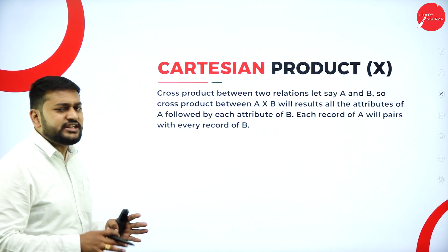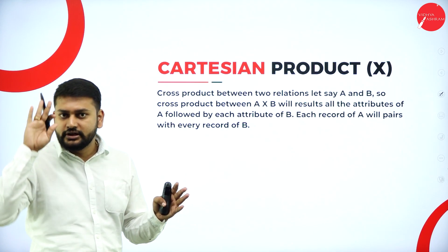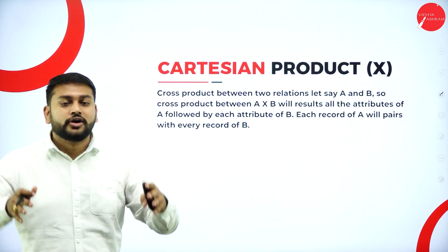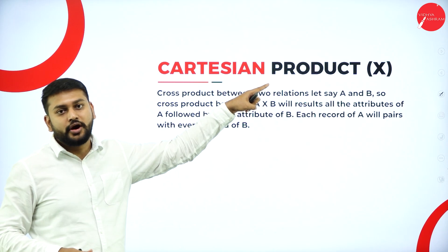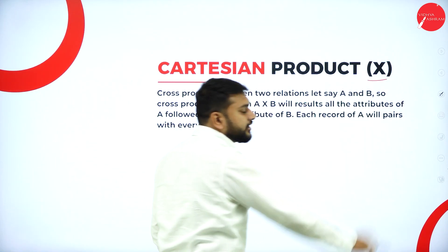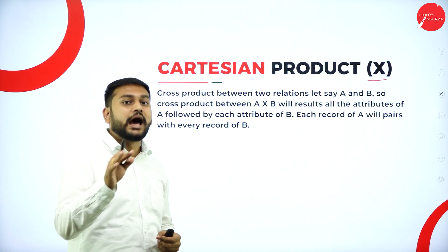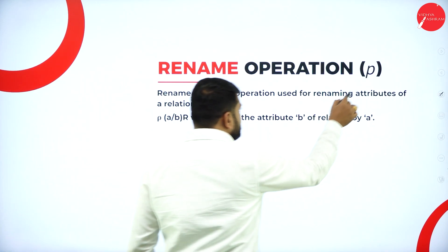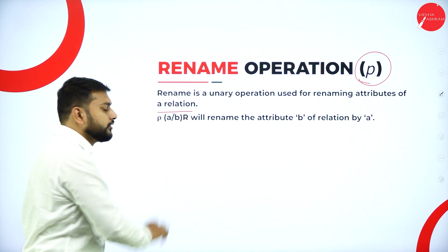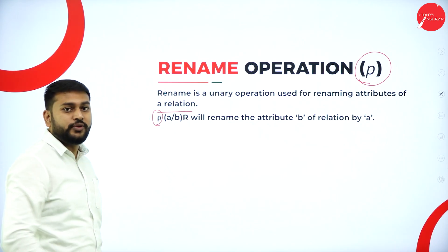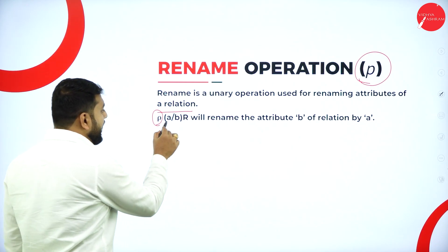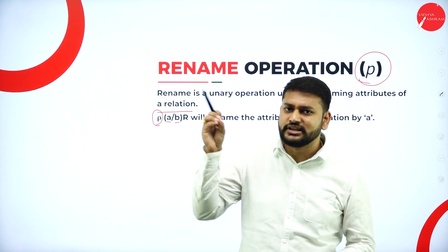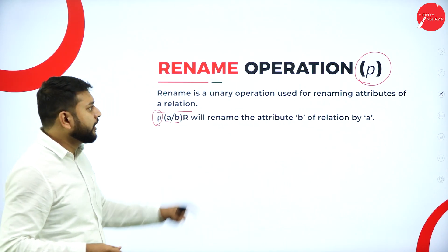Moving forward to Cartesian product. Each and every value in relation A will get multiplied with each and every value in B. The result will be the Cartesian product, and you have to use the corresponding symbol. Moving forward to the rename operation — I will be using this symbol to rename the attributes of a relation. A will get renamed by B. Renaming means changing the existing name of a relation.